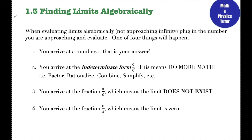The fourth thing that can happen once I've plugged in my numbers is I end up with 0 over a number — 0 over 1, 0 over 5, 0 over negative 20. That means that my limit is just 0 and I don't have to do any more work.